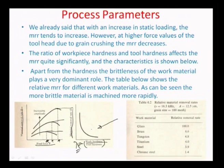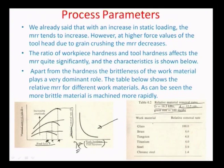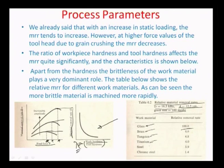Some relative material removal rates are shown for a frequency of 16.3 kHz, amplitude of 12.5 micrometers, and grain size of 100 mesh. For different work materials, more brittle materials like glass have a very high material removal rate — effectively meaning workpiece hardness to tool hardness ratio is lower. As materials become more ductile on a higher scale, the MRR reduces because of the change in material.